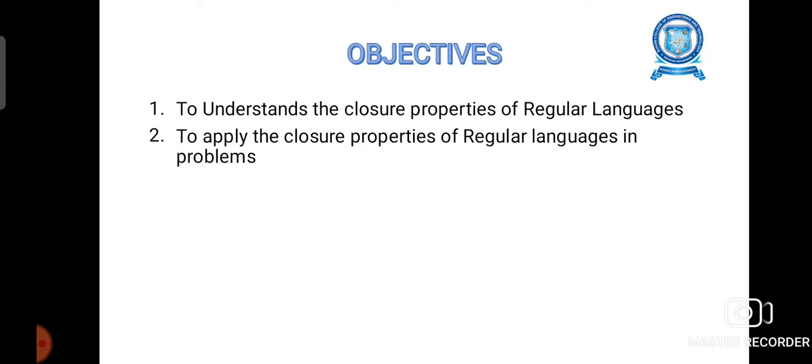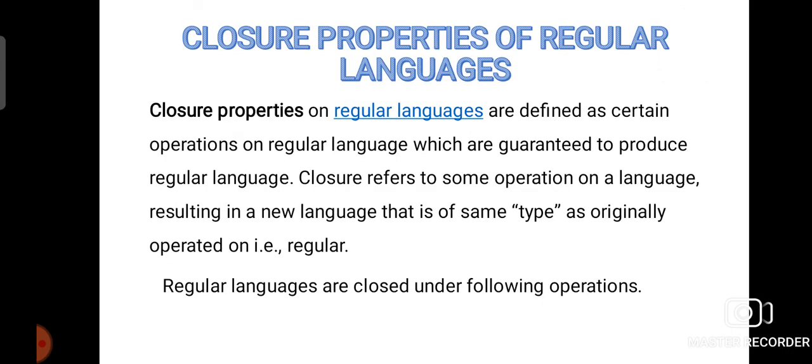Closure properties on regular languages are defined as certain operations on regular languages which are guaranteed to produce regular languages. Closure refers to some operation on a language resulting in a new language that is of the same type as originally operated on — that is, regular.